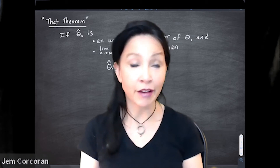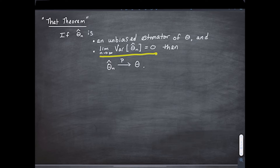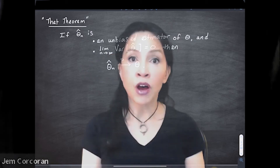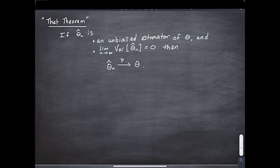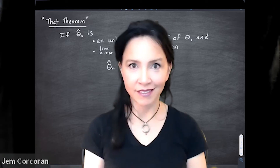One of them we affectionately refer to as that theorem. As a reminder, that theorem says that if we're trying to estimate a parameter theta with a random variable theta n hat, if we have two properties — one being that theta n hat is an unbiased estimator of theta, and two being that the variance of theta n hat goes to zero as n goes to infinity — then that's enough to say that theta n hat converges in probability to theta. Those are sufficient conditions, not necessary. I know you've all been waiting to loosen up the condition that theta n hat be an unbiased estimator and replace it with theta n hat being an asymptotically unbiased estimator of theta. I've got good news for you.